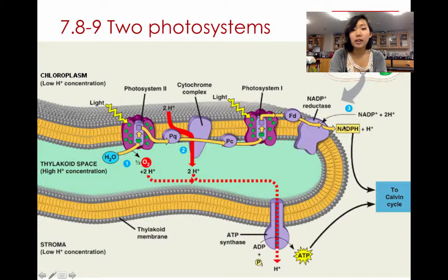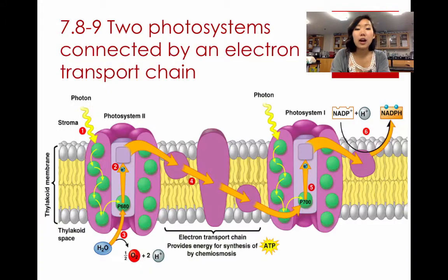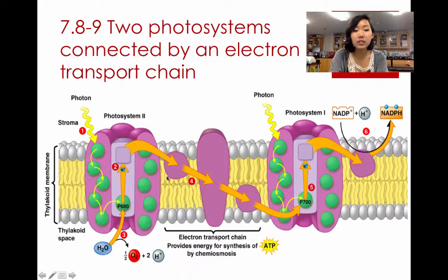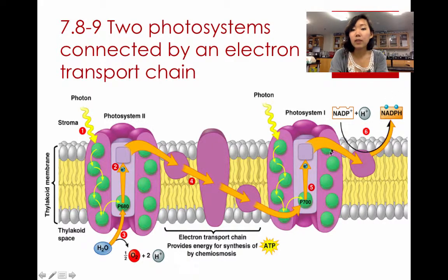These two products, NADPH and ATP, are what's going to leave and go into the Calvin cycle. This diagram here is just a more zoomed-in picture to see what's happening. The photon energy hits this chlorophyll, the electron gets excited, replenished by H2O. The electron travels down the electron transport chain, pumps protons in, and forms ATP through ATP synthase. The electron replenishes the chlorophyll on photosystem I, gets hit by another photon, and ultimately that electron reduces NADP+ to form NADPH.